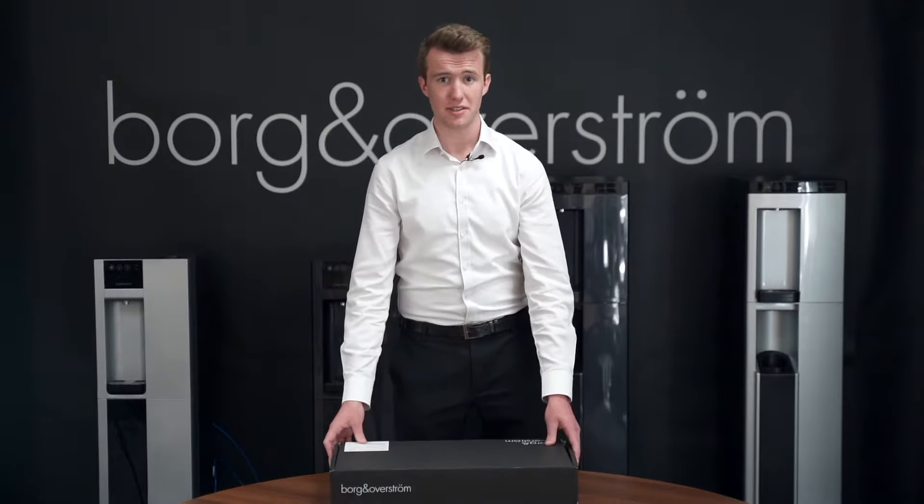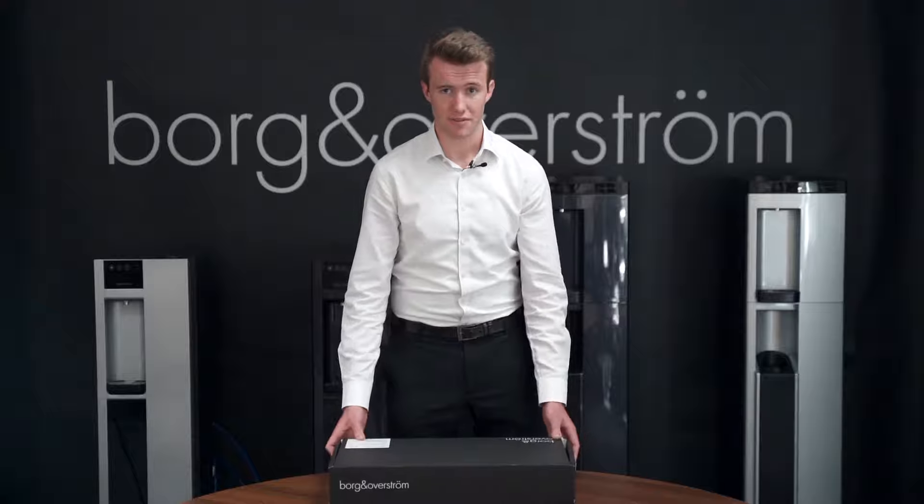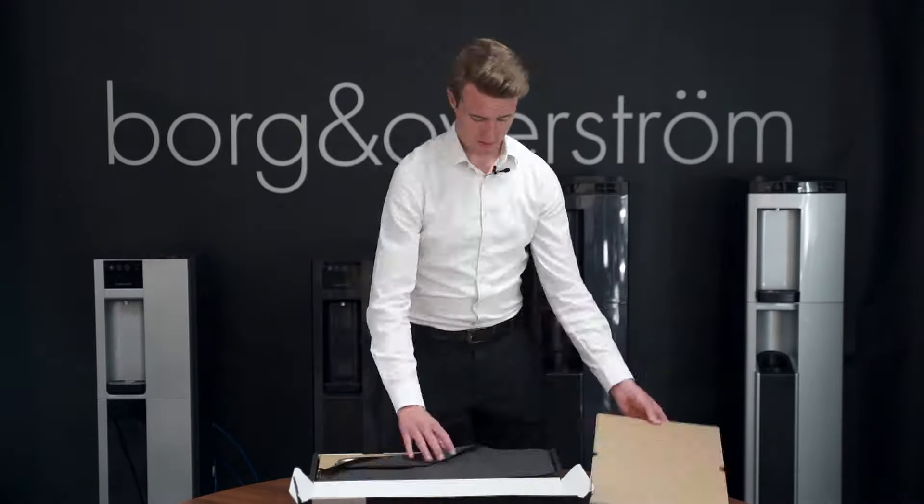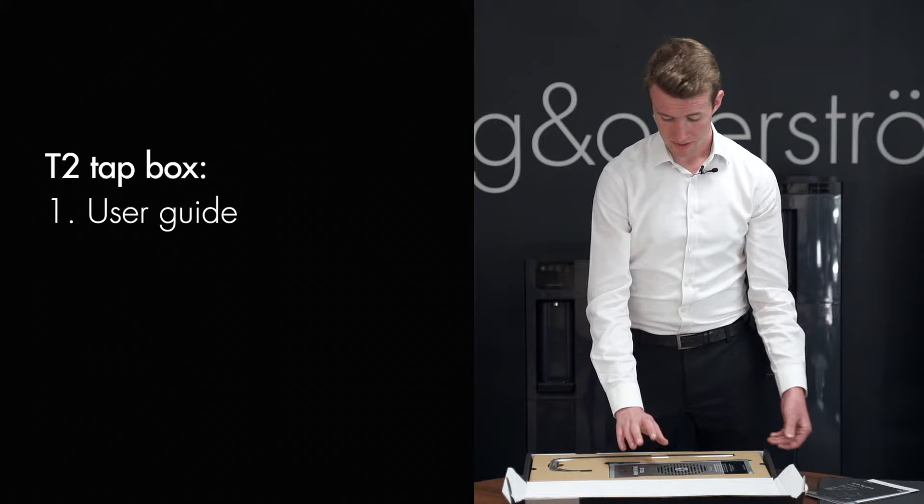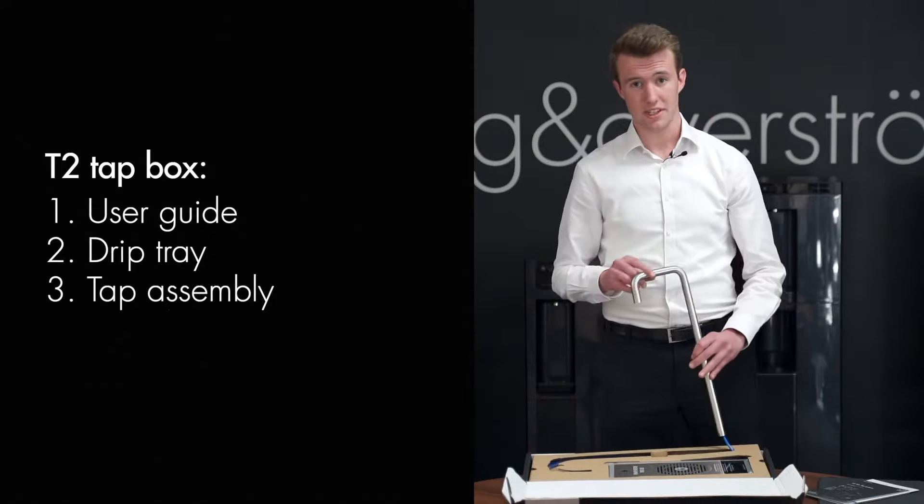Starting with the TAP itself, in the first box we have the T2 TAP assembly along with its relevant fittings. In the box, you'll find the user guide, the drip tray, and the faucet itself.